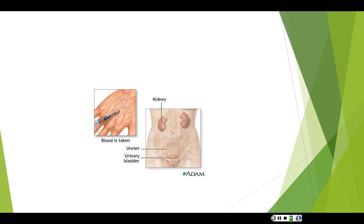That hormone is ADH — antidiuretic hormone. When the bladder fills with about 200 to 250 cc of urine, this causes the bladder to become moderately distended, and that's when we have the urge to urinate. When that quantity reaches about 400 to 600 cc, that's when we start to feel uncomfortable.